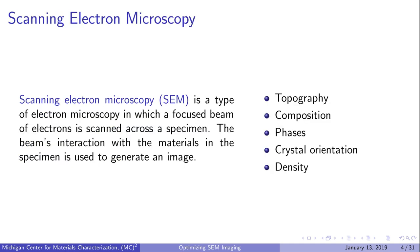Scanning electron microscopy is a type of microscopy that uses electrons to probe the surface of a specimen. With this technique, a focused beam of electrons is scanned across a specimen. Based on how the beam interacts with the materials in the specimen at each location during scanning, we can create a grayscale image where each location scanned corresponds to one pixel in the final image. SEM can reveal topography and regions of different compositions, phases, crystal orientations, or densities.